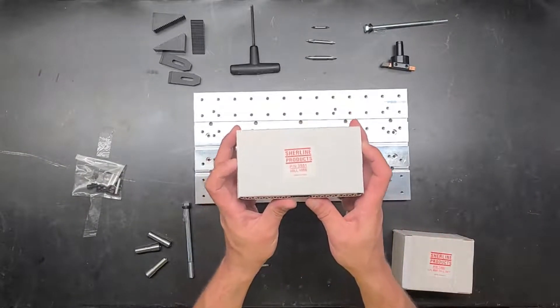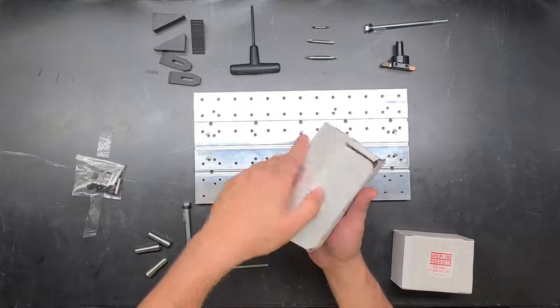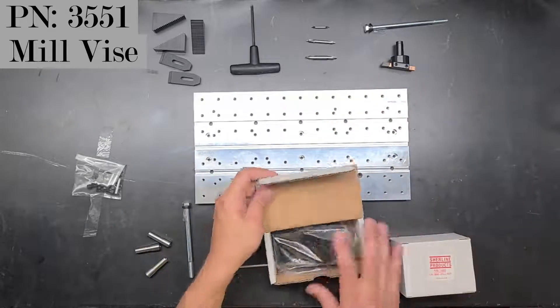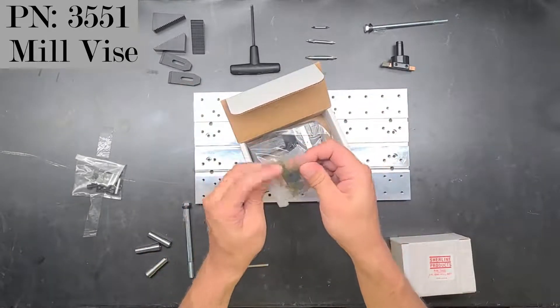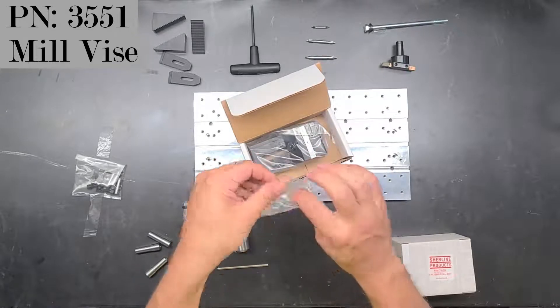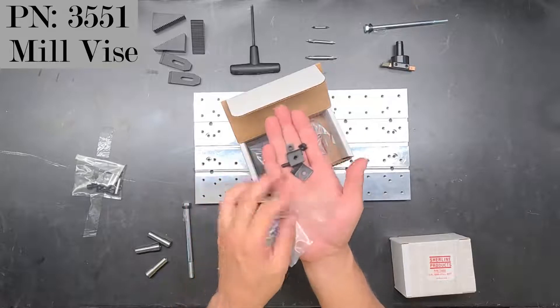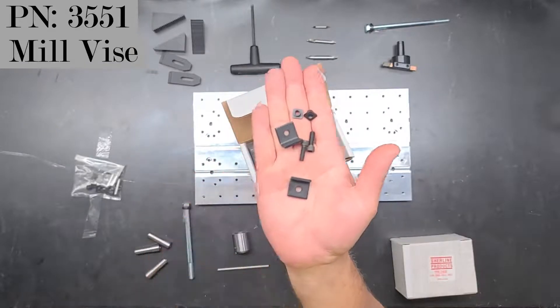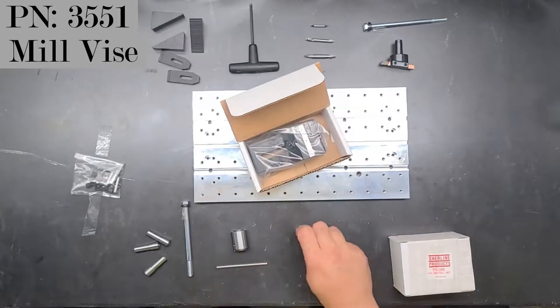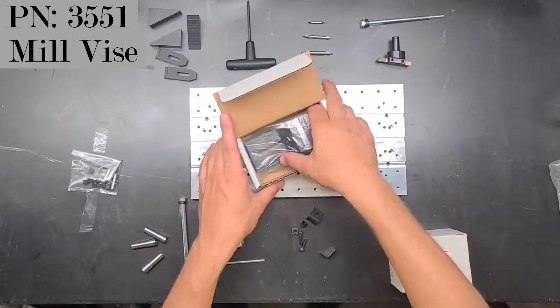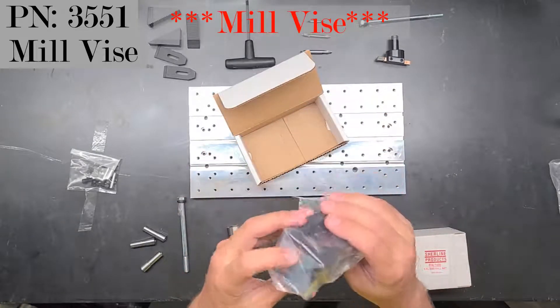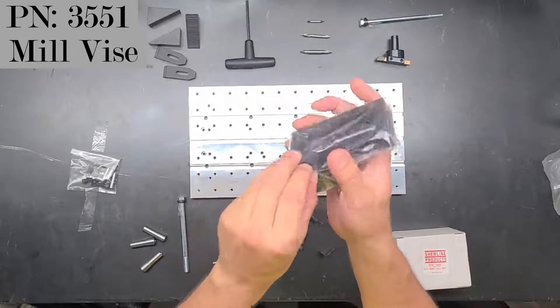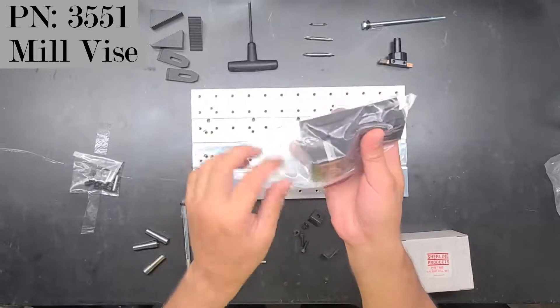Next we've got something a little more fun and that is the mill vise part 3551. We've got another instruction sheet. A set of right angle clamps as well as their T-nuts and bolts to clamp the mill base down to the mill table. And the mill, as you can see, it's still perfectly sealed and taped up. So I haven't even had a chance to look or handle this thing yet. I'm glad to be able to share this with you.